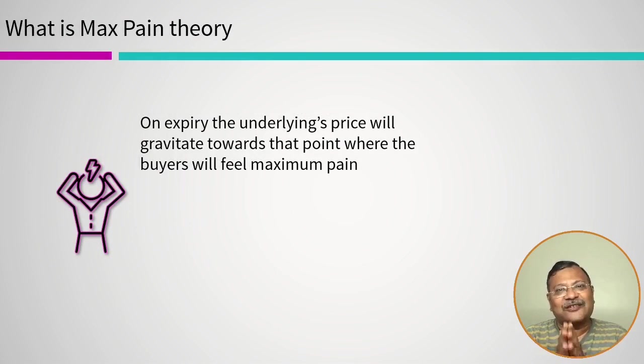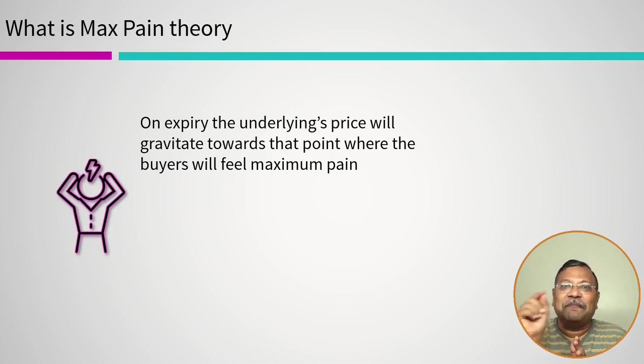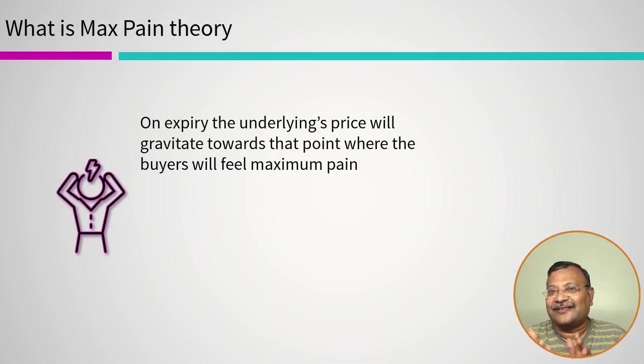What the max pain theory states is that on expiry, the underlying asset price will gravitate or move towards that point where the buyers will feel the maximum pain. As the option nears expiry, the underlying asset's price will tend to move towards that point where the buyers will experience the maximum pain.